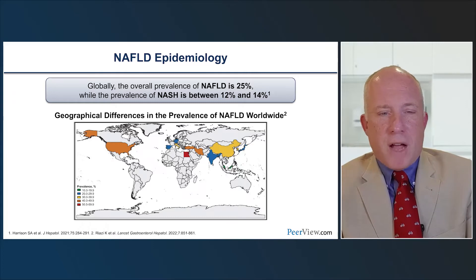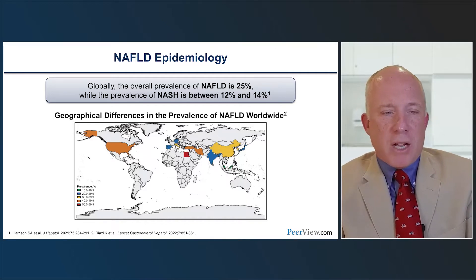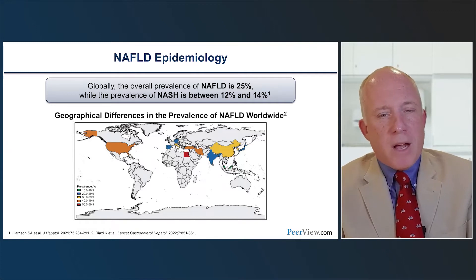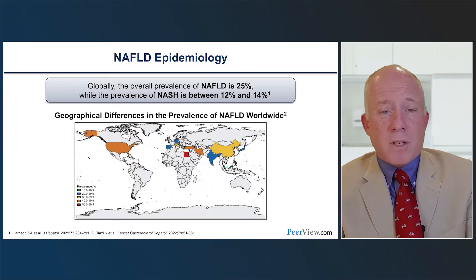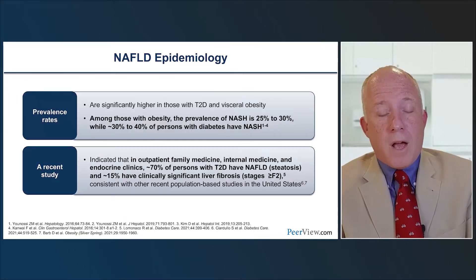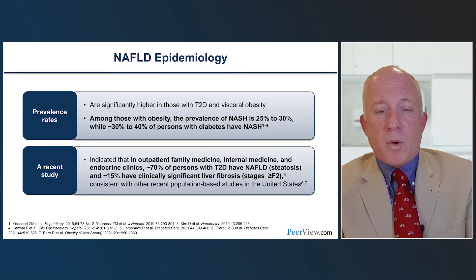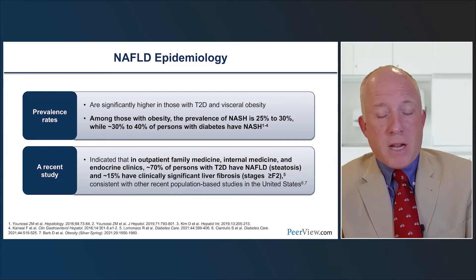What's the epidemiology of NAFLD? About 25% of the population has NAFLD. The most severe portion — NASH — occurs in 12% to 14%, roughly the same rate or even slightly higher than diabetes. Prevalence is highest in Middle Eastern countries. NASH is seen in 25% to 30% of those with obesity, and 30% to 40% of those with diabetes and truncal obesity.